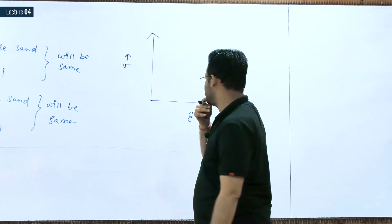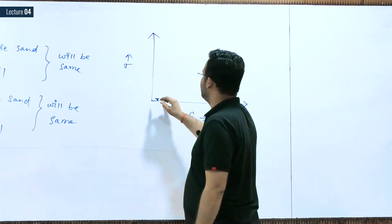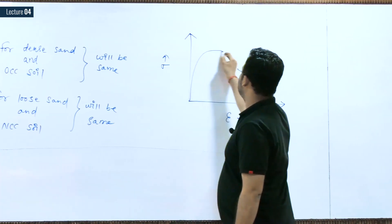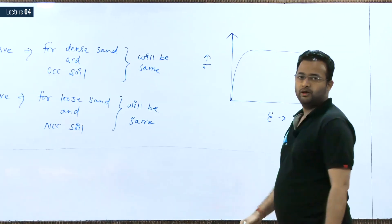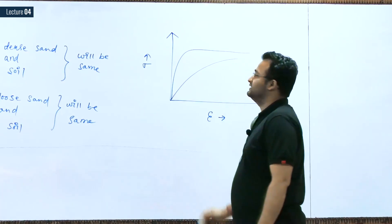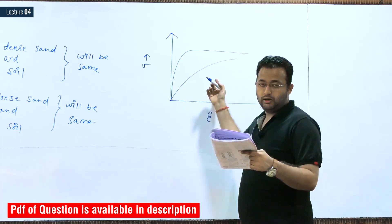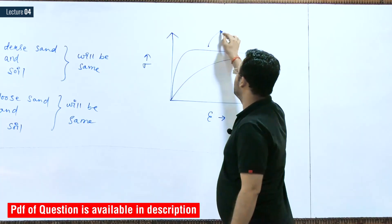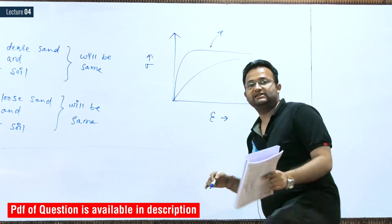Or actually we can take the stress-strain in terms of major-minor principle stresses also, that is fine. So here the curve will be something like this for dense and OCC soil, and the curve will be something like this for your NCC and loose curve.